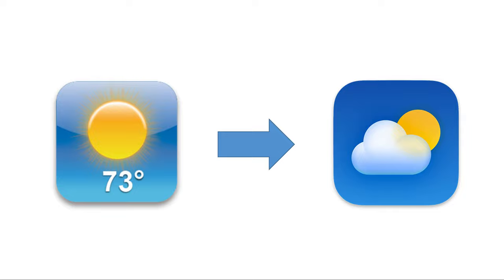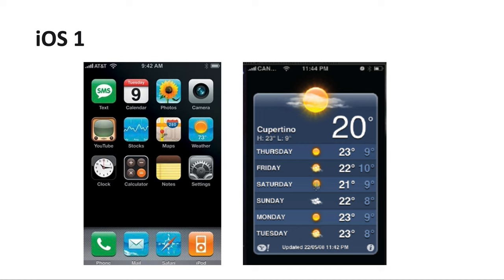Today let's take a look at the weather app changes on the Apple platform over the years. First, let's look at iOS 1 — at that time we called it iPhone OS. The weather app is a built-in application in the first distribution, and when you click this app the user interface just lists your city and the weather for the next few days.